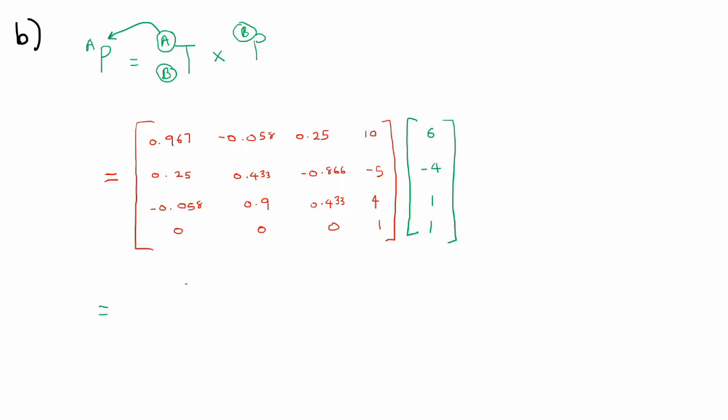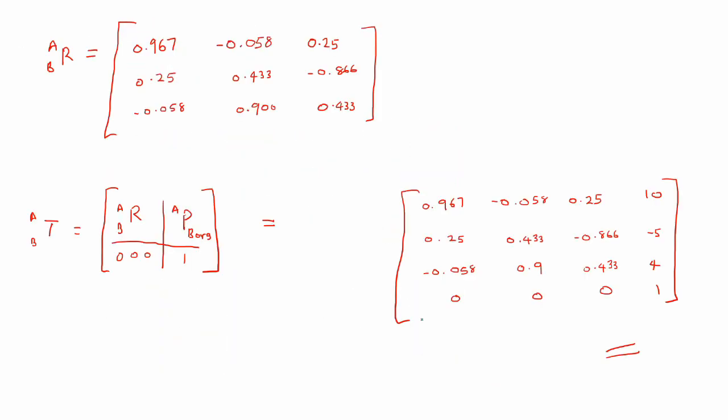So you have the transformation matrix TAB and you just simply multiply this with the position vector 6, minus 4, 1, and 1 to complete the matrix. And by doing this you should get 16.28, negative 6.1, 0.49, and 0.49, 1. Therefore your PA would be equal to 16.28, negative 6.1, and 0.49. So this shows that same point defined in B but now expressed in terms of frame A.